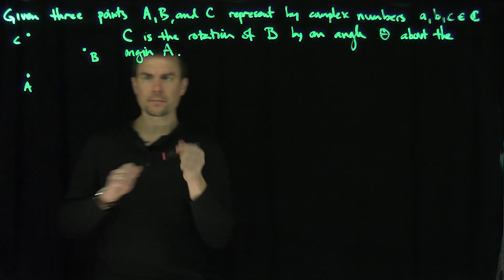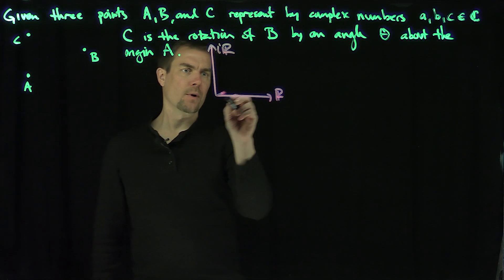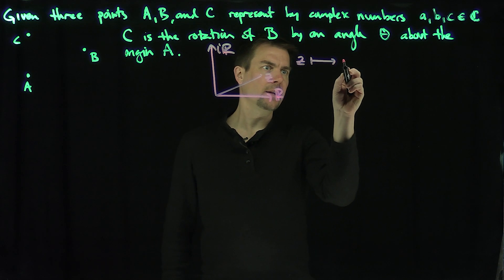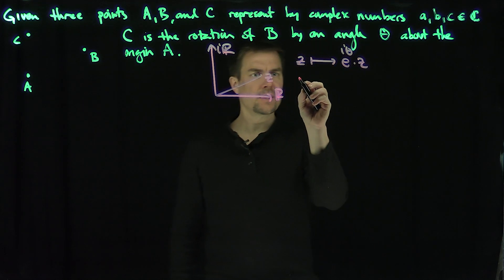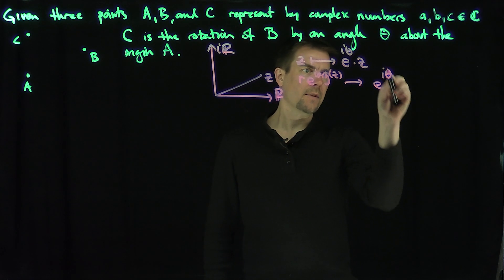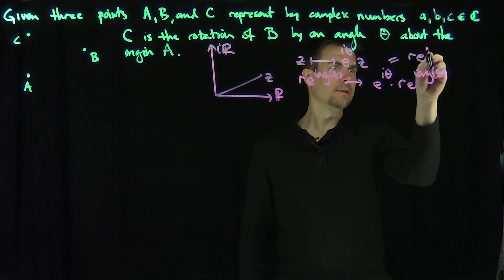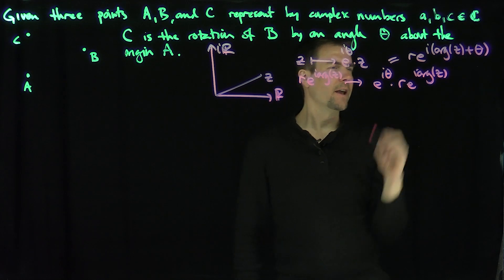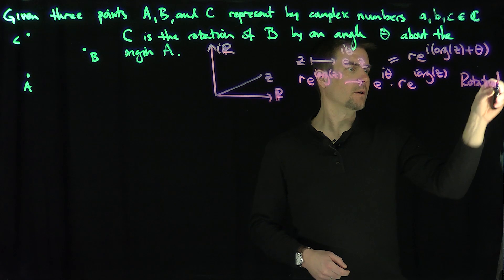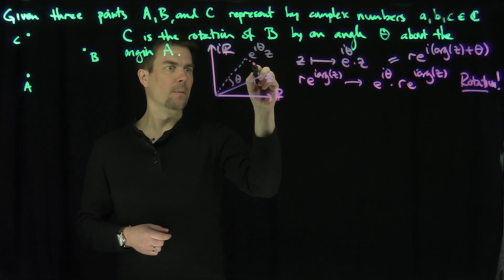Let's think about a simpler version of this. If I give you a complex number Z — here's the real axis and the imaginary axis — if I multiply Z by e to the i theta, what happens? If I look at Z getting mapped to e^(iθ)·Z, I put Z in polar coordinates as r·e^(i·arg Z), and then send that to e^(iθ)·r·e^(i·arg Z), which equals r·e^(i(arg Z + θ)). In other words, I am shifting the argument by theta radians counterclockwise — so this is just a rotation. I'm rotating Z to a new point along a circle, because they have the same modulus.